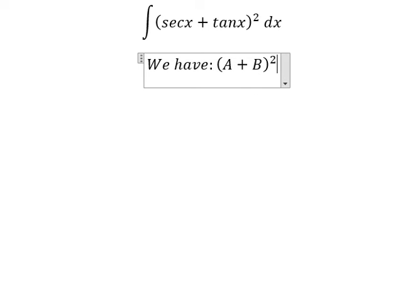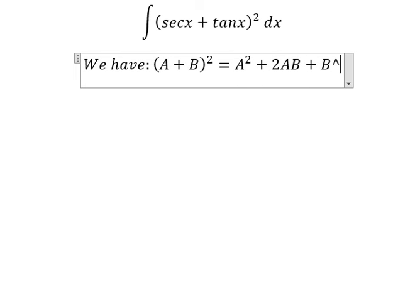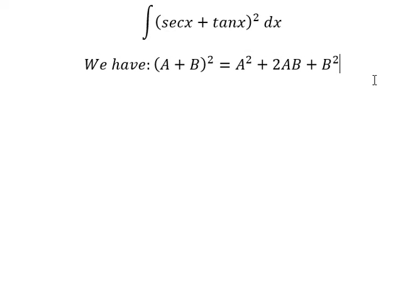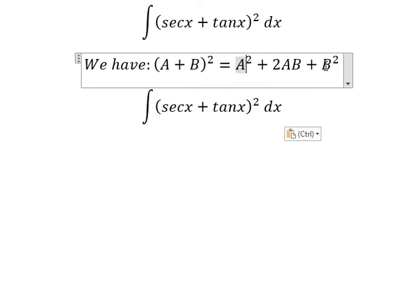A plus B to the power of 2 equals A squared plus 2AB plus B squared. Now we need to expand this one by this one.